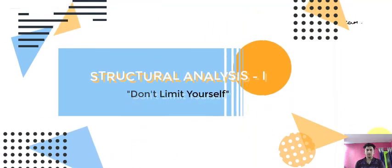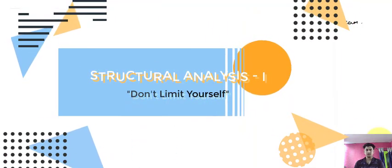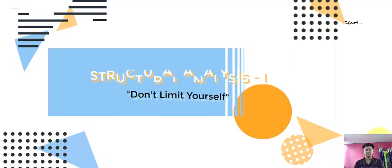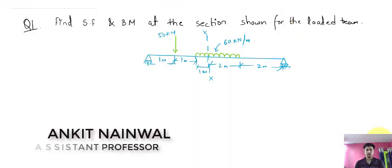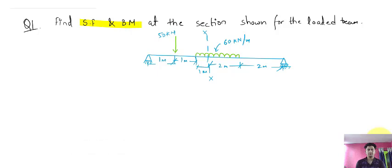Hello everyone, my name is Ankit Nanwal and today we will be starting with some more numericals based on ILD. The first numerical says that we need to find the shear force and bending moment at a section shown for the loaded beam. This is the beam that has been given — point A, point B, point C, point D, and point E — and at section XX it has been asked to calculate the shear force and bending moment.